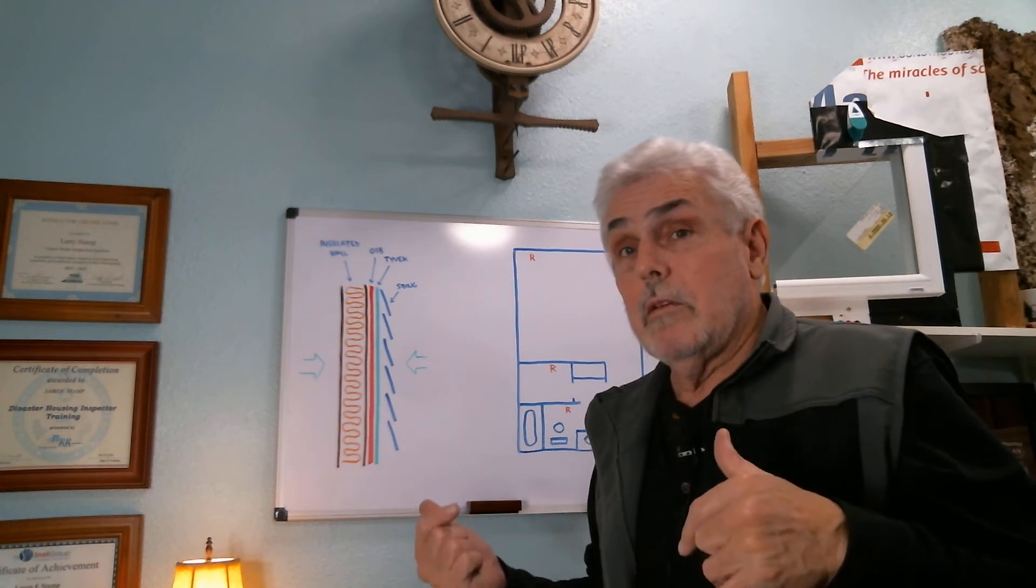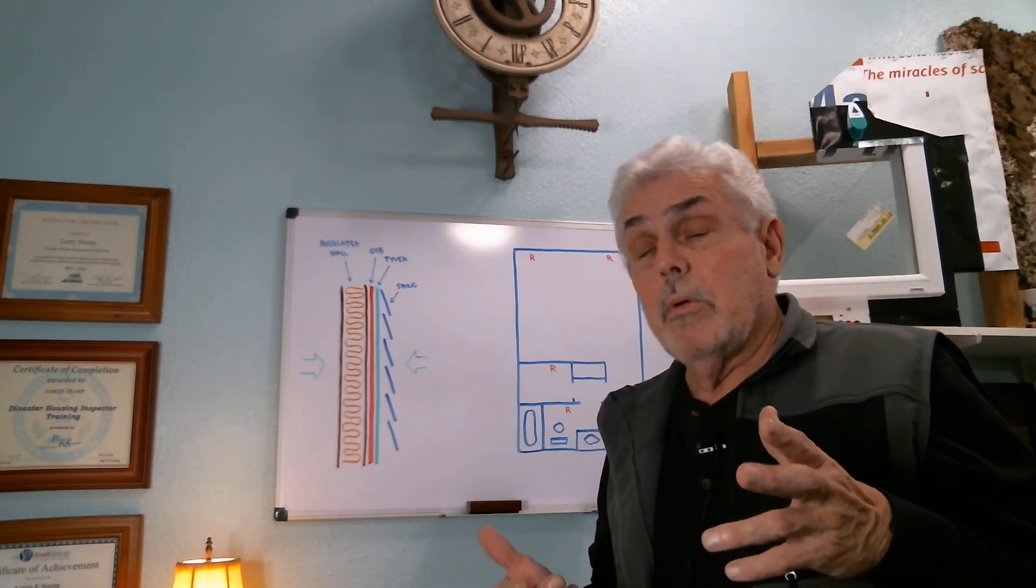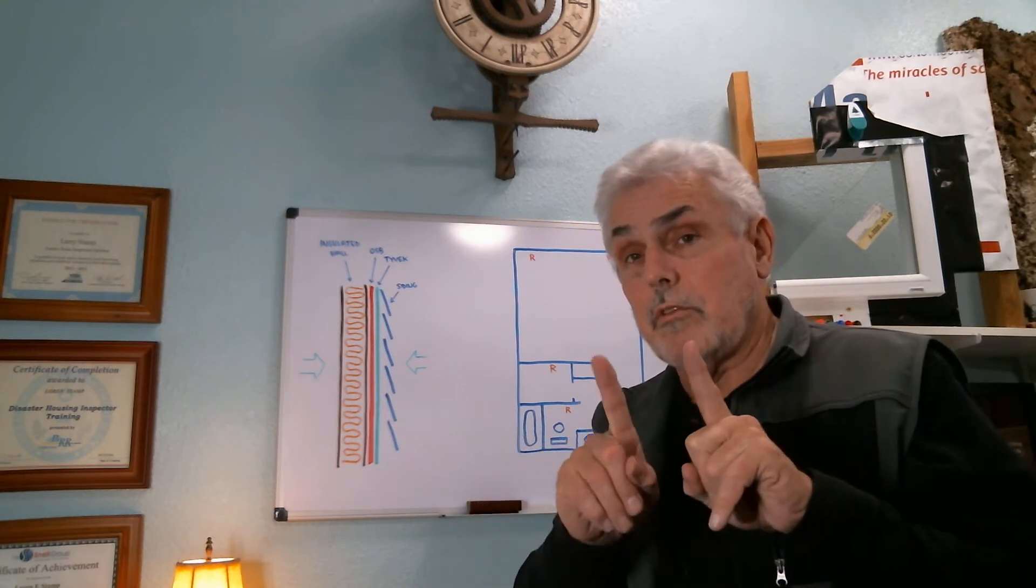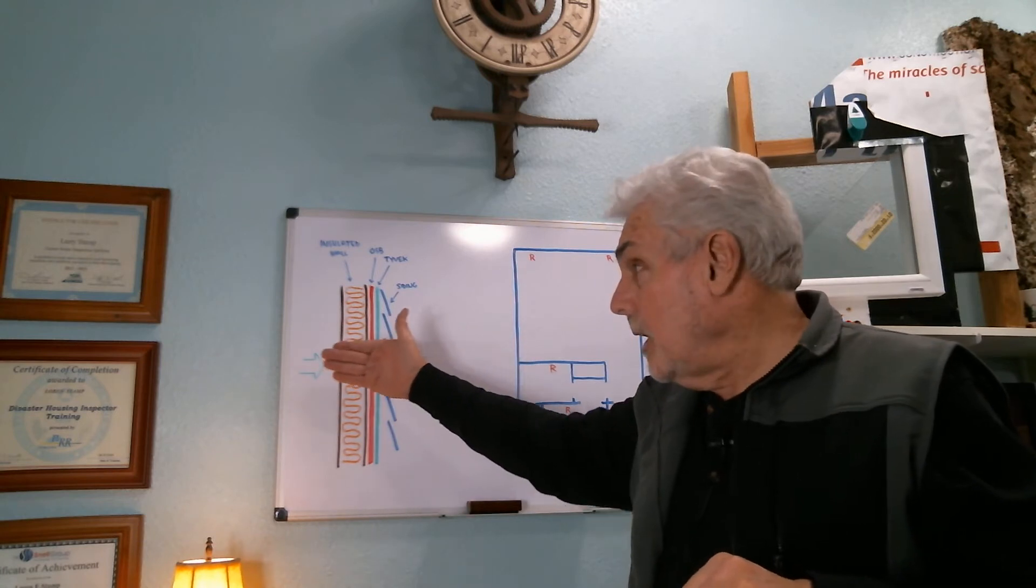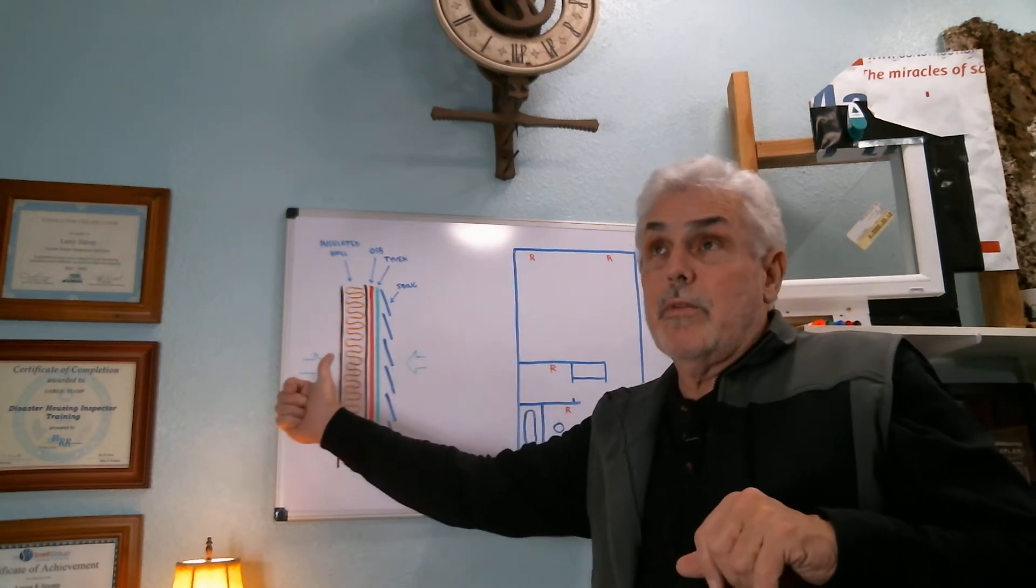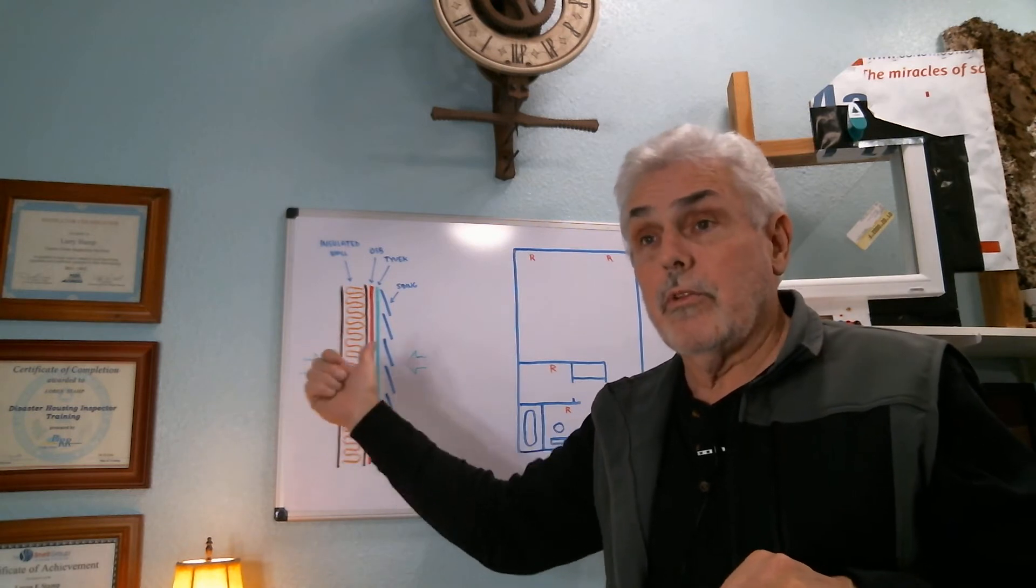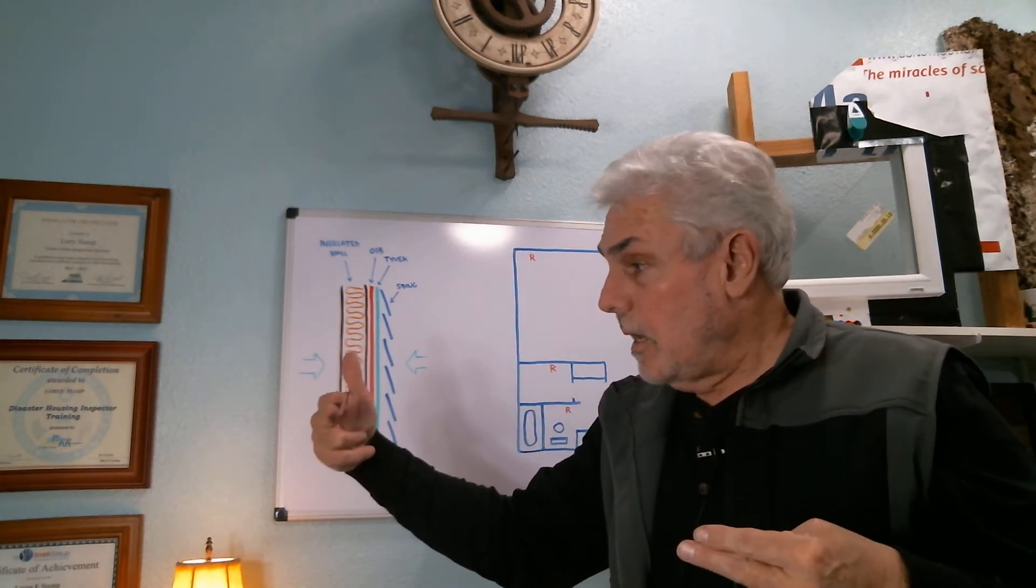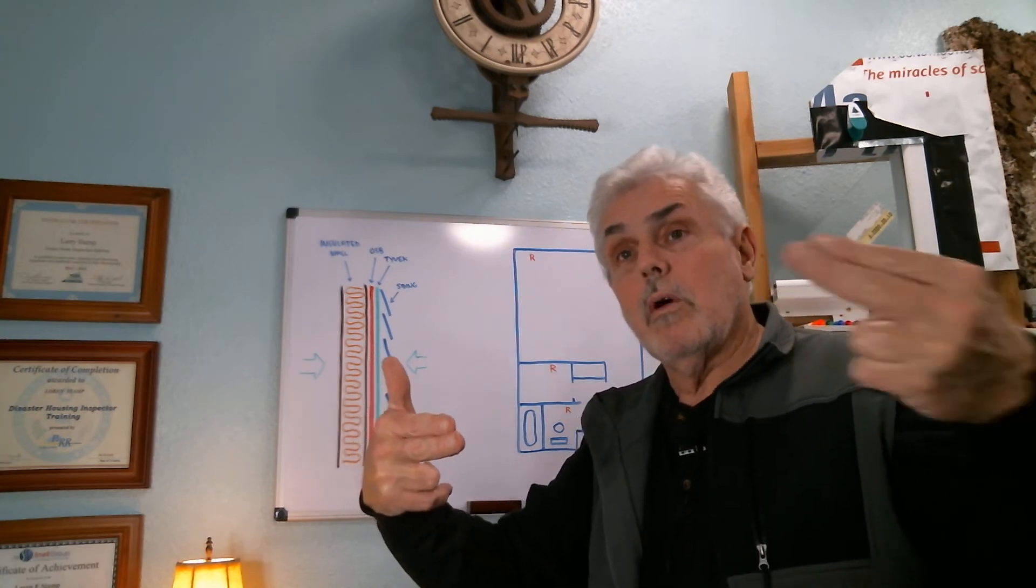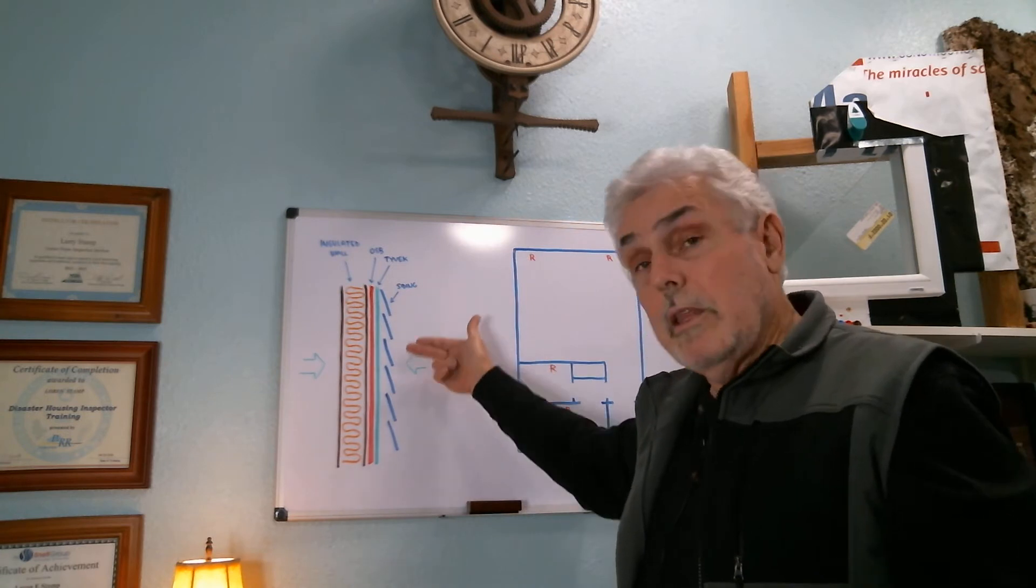The next thing on that layer is a house wrap. And I labeled that as Tyvek, although Tyvek is a brand name, there's lots of different materials out there that are used for that. But a house wrap basically does two things. Number one is it prevents any kind of bulk water from getting into the structure. And from the inside out, it allows water vapor to escape. So it's kind of a two directional thing. I don't want water in this way, but I want vapor to escape this other direction.